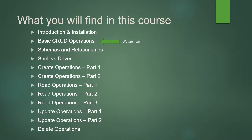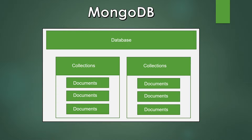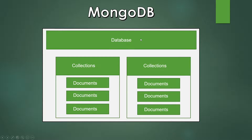A concept I want to revisit from the previous video is how MongoDB is structured — the idea behind a database, a collection, and a document. The white part represents the server. On our server we can have multiple databases, and under a database we get collections, and under collections we get documents. We navigate into a database, then into a collection, then query whatever documents we'd like.